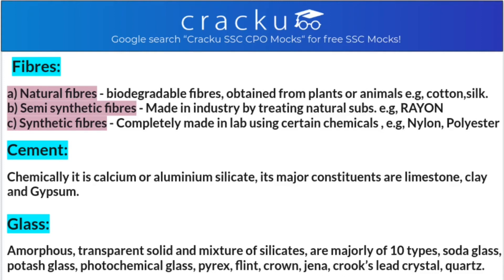After this comes glass. Glass is an amorphous transparent solid. It is a homogeneous mixture of silicates of different metals. The first prepared glass was made in Egypt.